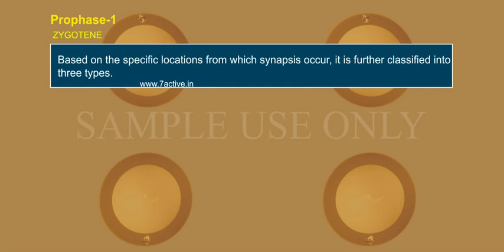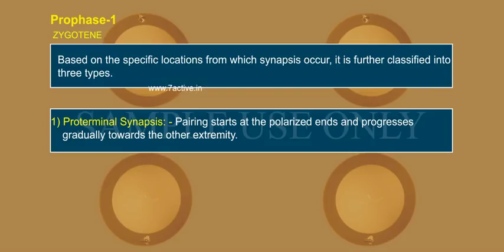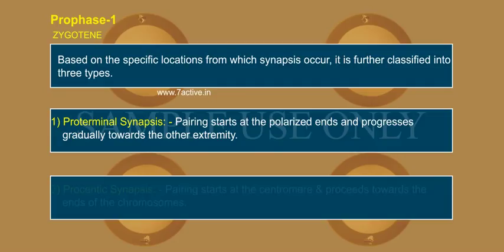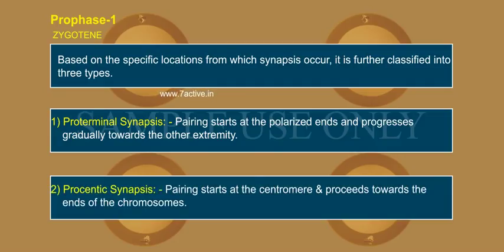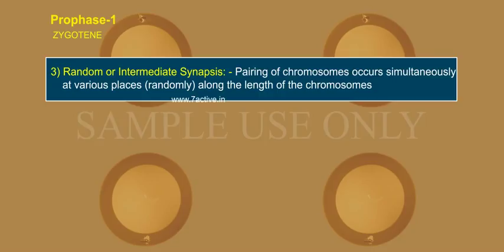Based on the specific locations from which synapsis occurs, it is further classified into three types: 1. Proterminal synapsis — pairing starts at the polarized ends and progresses gradually towards the other extremity. 2. Procentric synapsis — pairing starts at the centromere and proceeds towards the ends of the chromosomes. 3. Random or intermediate synapsis — pairing of chromosomes occurs simultaneously at various places, randomly, along the length of the chromosomes.